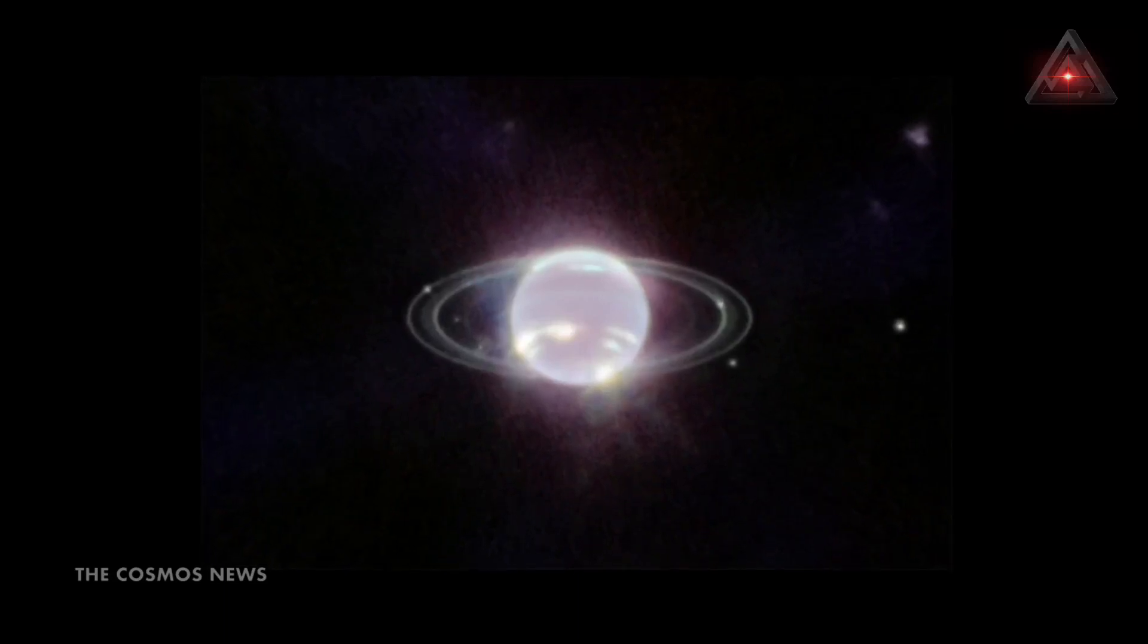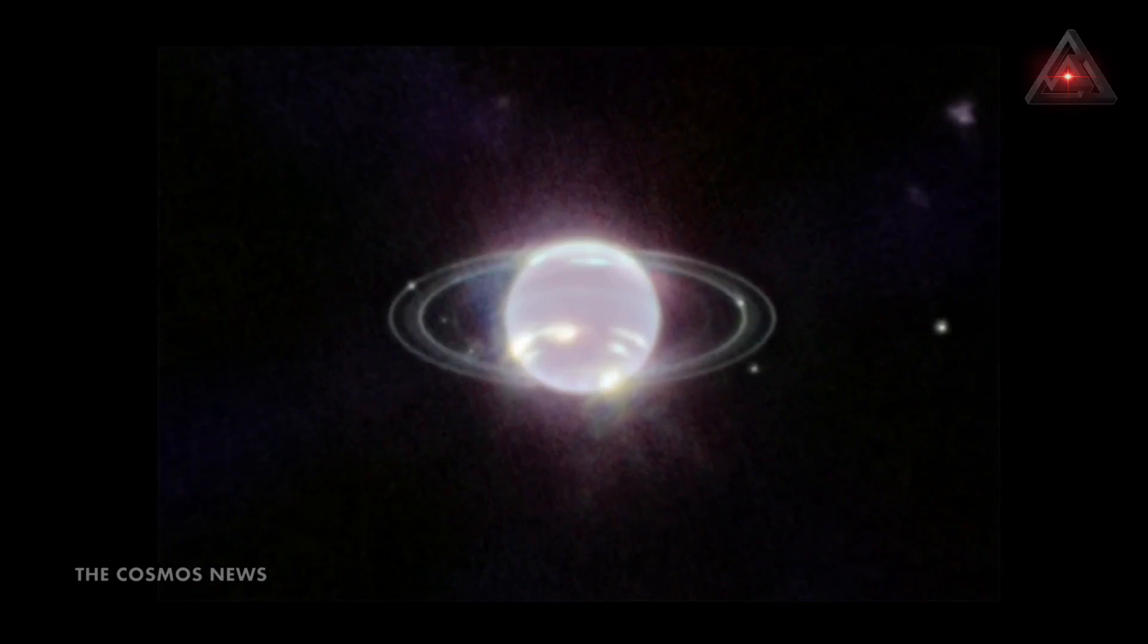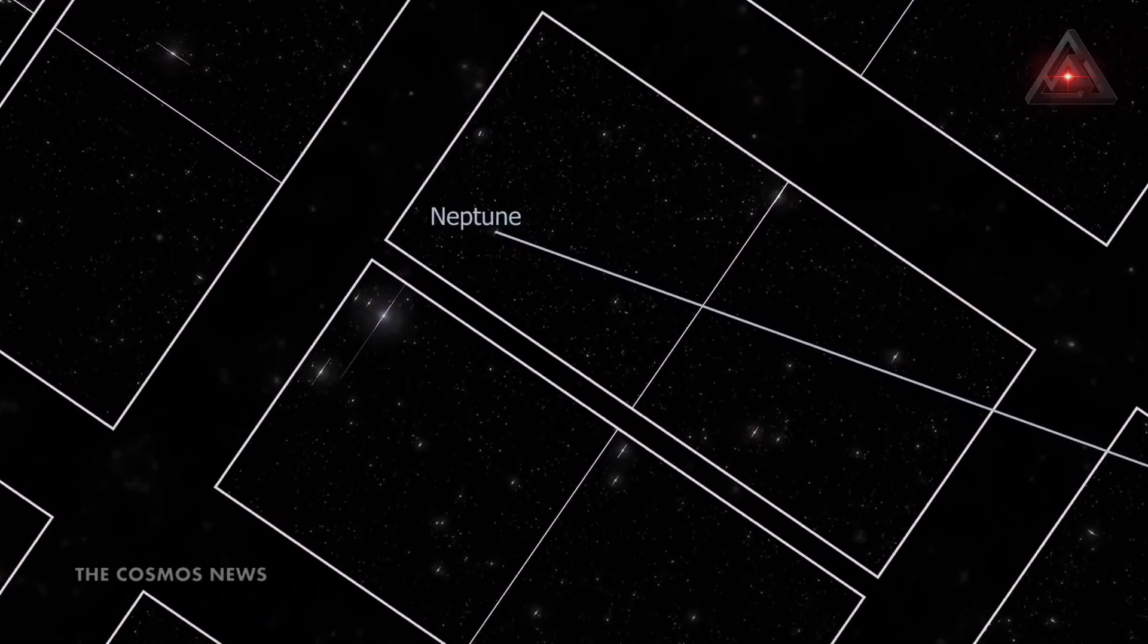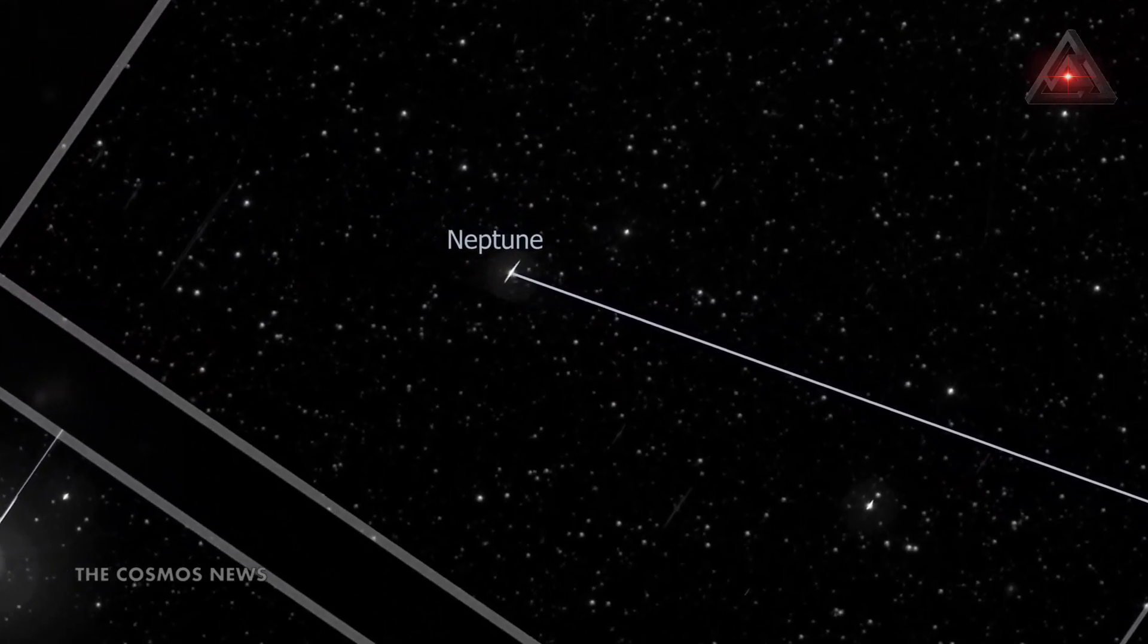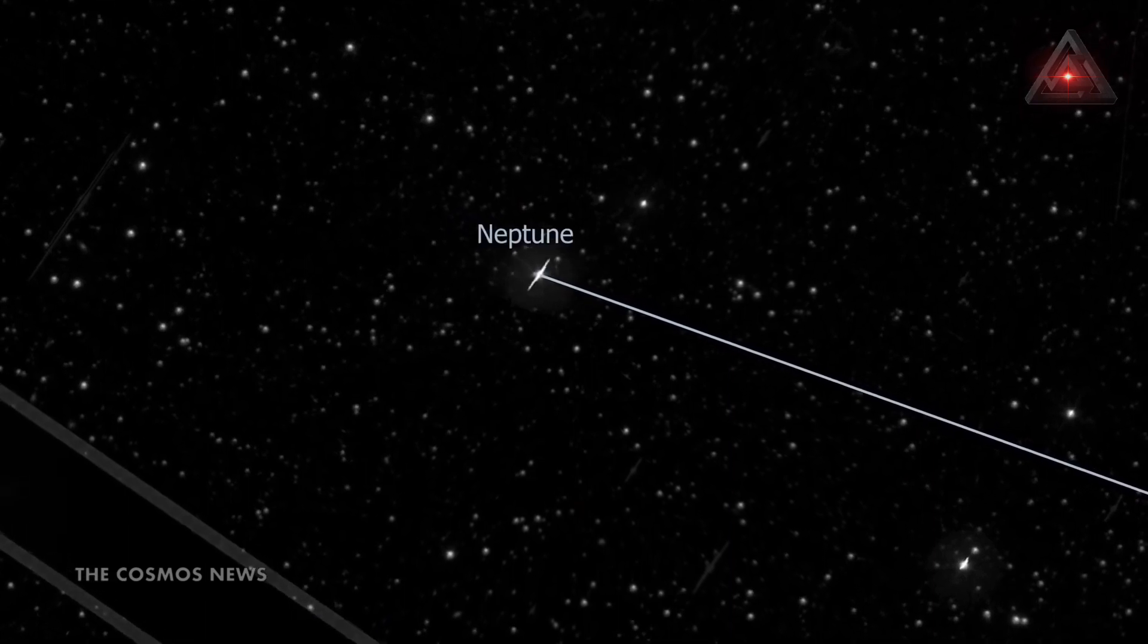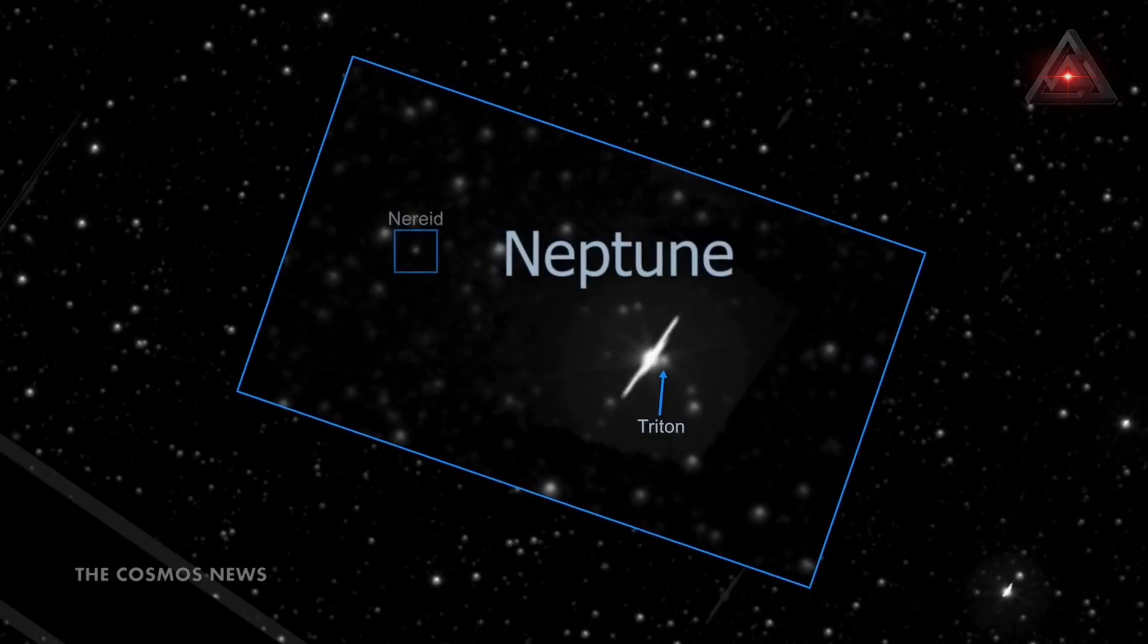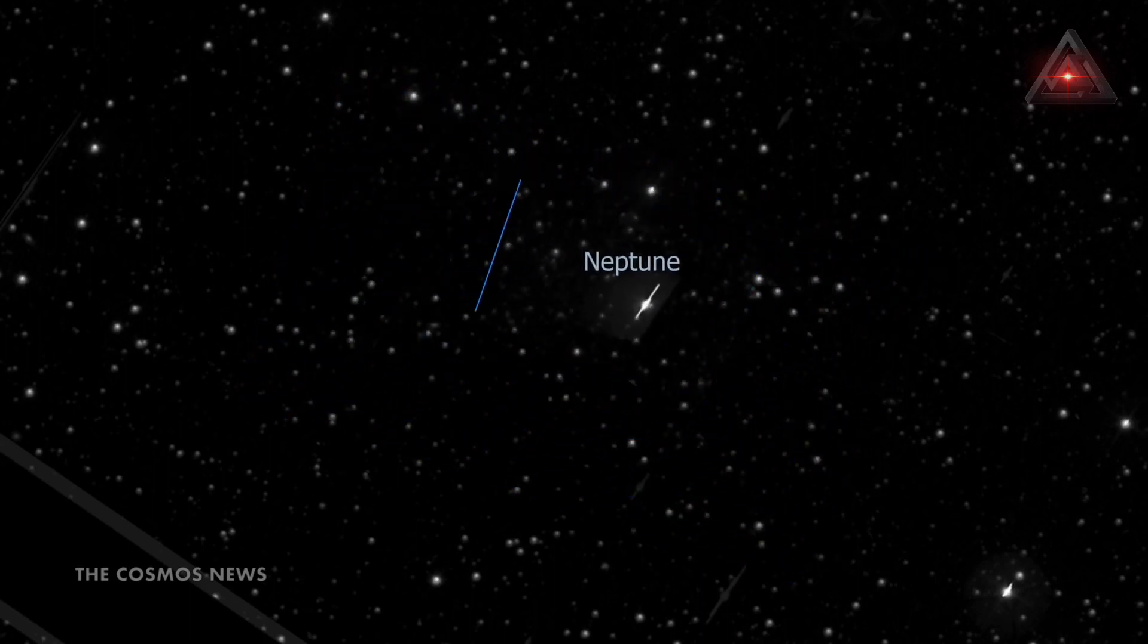Neptune has fascinated researchers since its discovery in 1846. Located 30 times farther from the sun than Earth, Neptune orbits in the remote dark region of the outer solar system. At that extreme distance, the sun is so small and faint that high noon on Neptune is similar to a dim twilight on Earth.